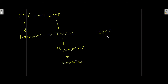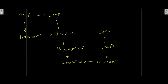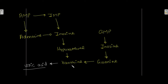From GMP, the pathway goes: GMP → inosine → guanine → xanthine. Both AMP and GMP converge at xanthine, and then xanthine is converted into uric acid in the presence of xanthine oxidase.